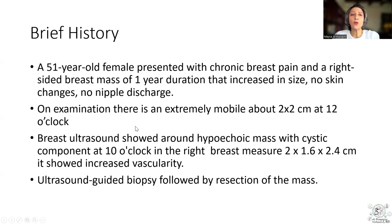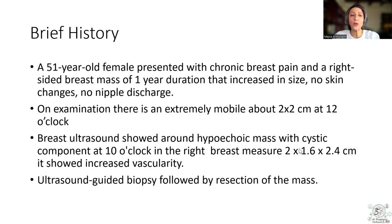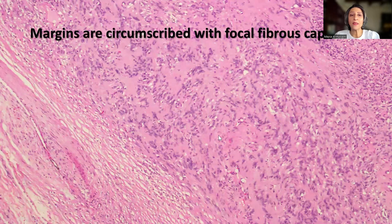This is a 51-year-old female patient who presented with chronic breast pain and a right-sided breast mass of one-year duration. On examination, the mass was extremely mobile and 2 by 2 centimeters in size. The ultrasound showed a round hypoechoic mass with a cystic component in the right breast, and an ultrasound-guided biopsy was followed by resection of the mass.